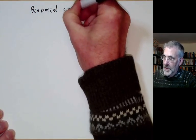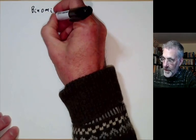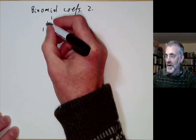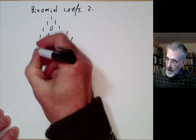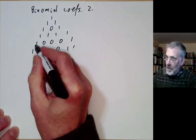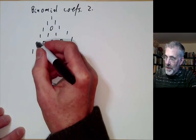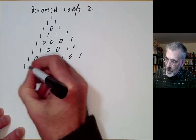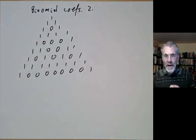First, we're going to look at binomial coefficients modulo two. What we do is write out Pascal's triangle, except whenever we get an even number I put zero and whenever we get an odd number I put one. So I'm putting zero instead of two here because one plus one is even. We can go on like this, and now we see we've got a one at each end of the line and a lot of zeros in the middle.